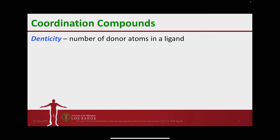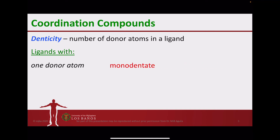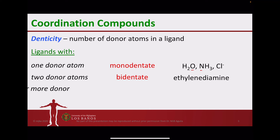One important terminology is denticity, which is the number of donor atoms in the ligand — those directly bonded to the central metal ion. We differentiate ligands depending on the number of donor atoms. With one donor atom, referred to as monodentate, examples include water, ammonia, or chloride — the donor atom being oxygen in water and nitrogen in ammonia. With two donor atoms it is called bidentate, an example being ethylenediamine. Three or more donor atoms are referred to as polydentate.